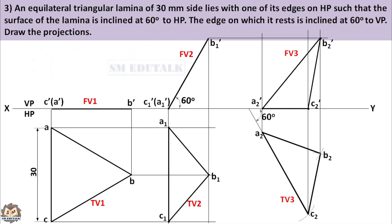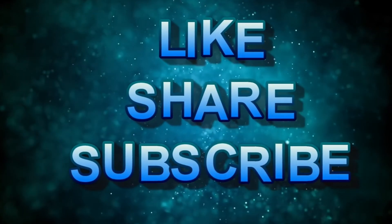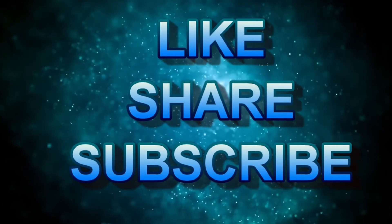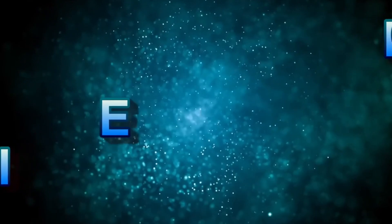You should use thick lines only for drawing the front view and top view of all three stages. All other lines and arcs should be drawn by thin lines. Don't forget to do dimensioning. In the next video, I will explain the fourth problem in this same position — inclined to both the planes. If you have not subscribed to the channel yet, support me by subscribing and don't forget to click the bell icon to get notifications regularly. Also, share this video with your friends. Thank you.